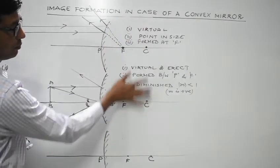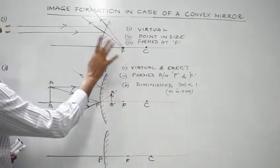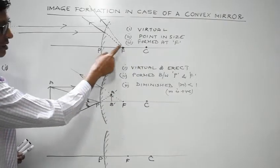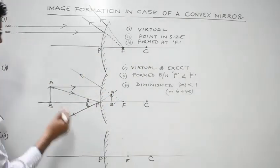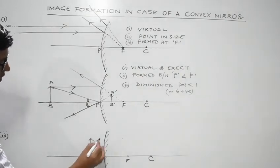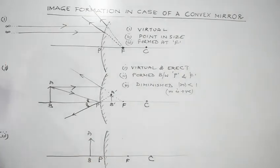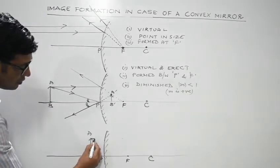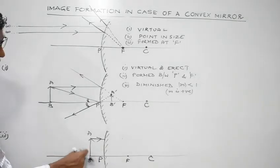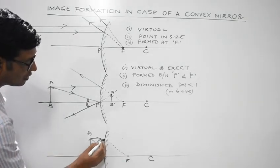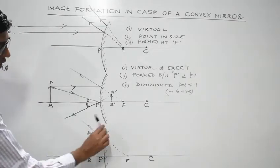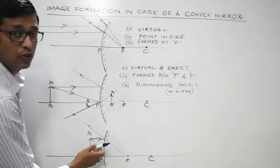Notice the similarity between cases 1 and 2. Both are virtual. The difference is that in case 1 the image is point-sized, while in case 2 it is diminished but has a finite size. For case 3, with the object placed very close to the mirror, the first ray is again parallel to the principal axis. After reflection it appears as if it is coming from the focus.